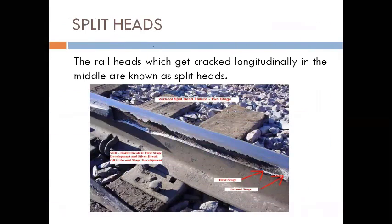Next are split heads. Split heads occur when the rail head gets cracked longitudinally in the middle — that is, along the length of the rail. The head is totally flowed over to another material and splits off longitudinally. If the splitting occurs in the longitudinal direction along the length of the rail, it is called a split head.